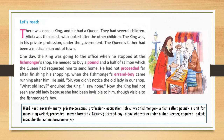The king was in his private profession under the government. The queen's father had been a medical man out of town — the father of the queen, that is the king's father-in-law — who lived and practiced out of town.